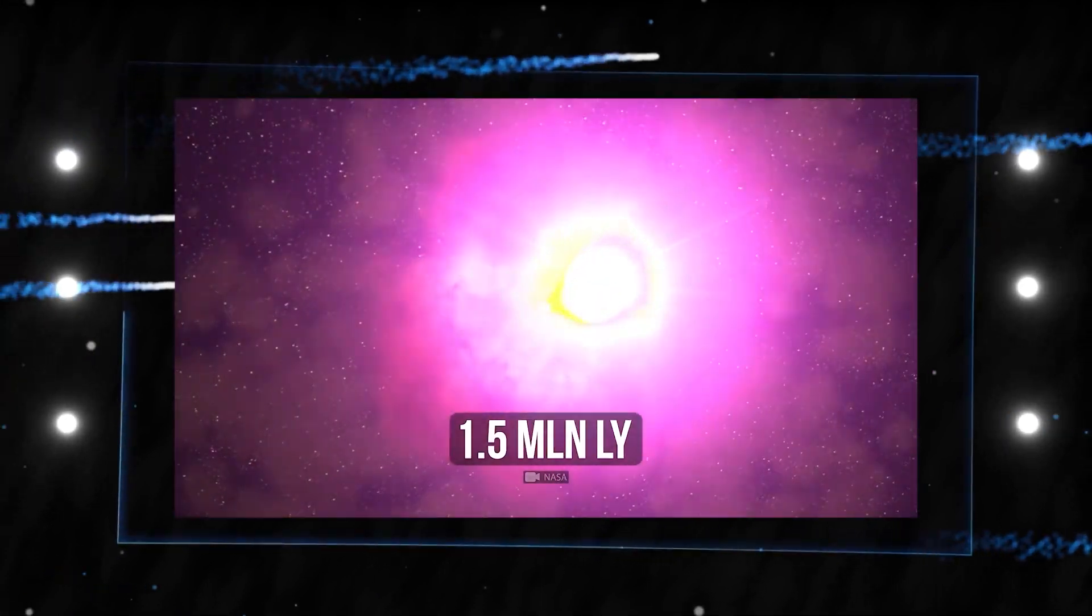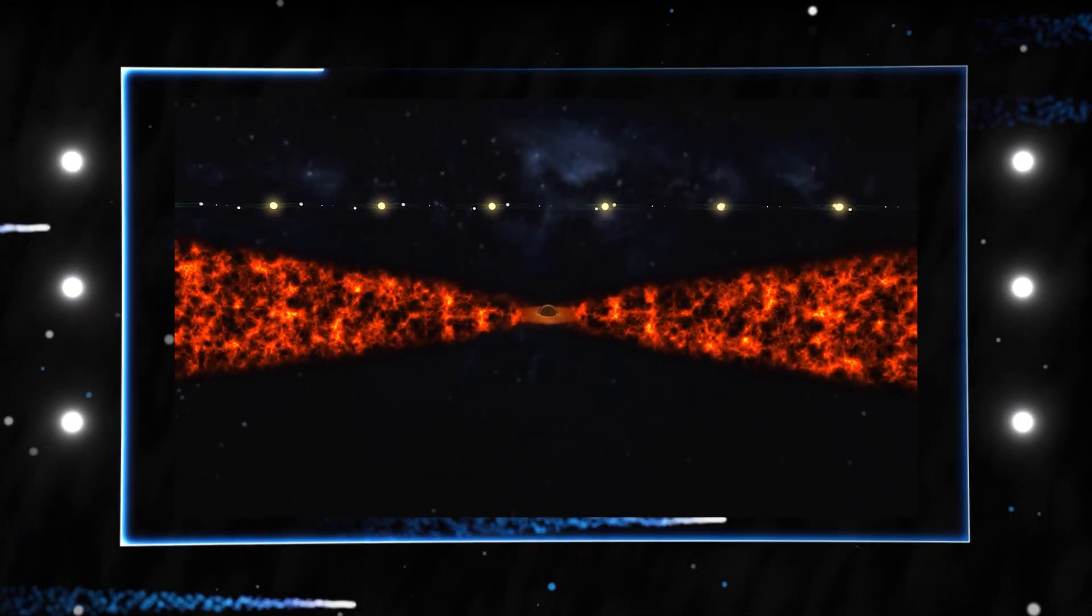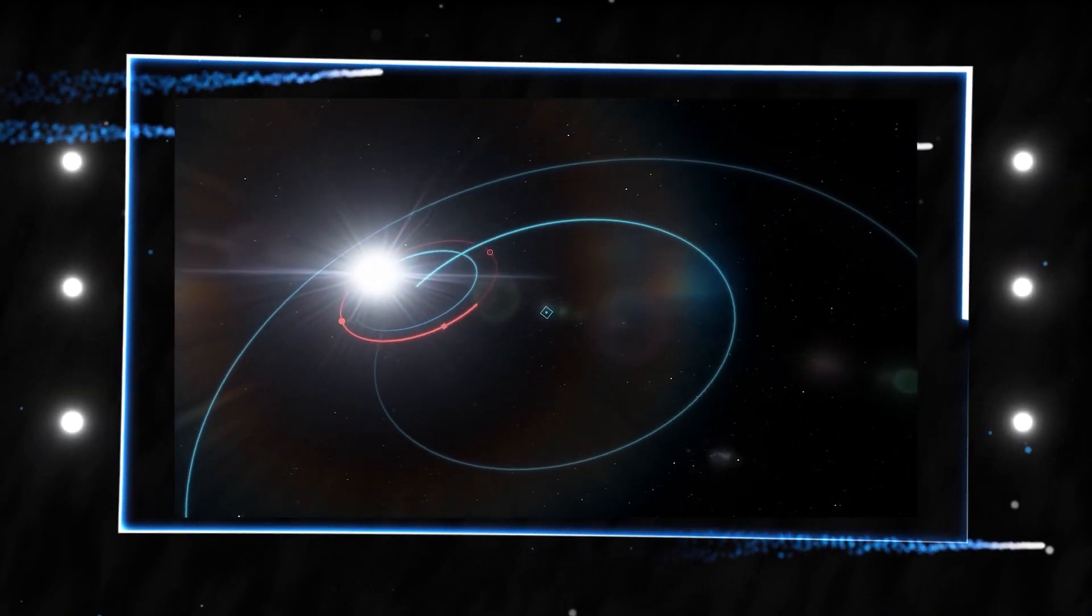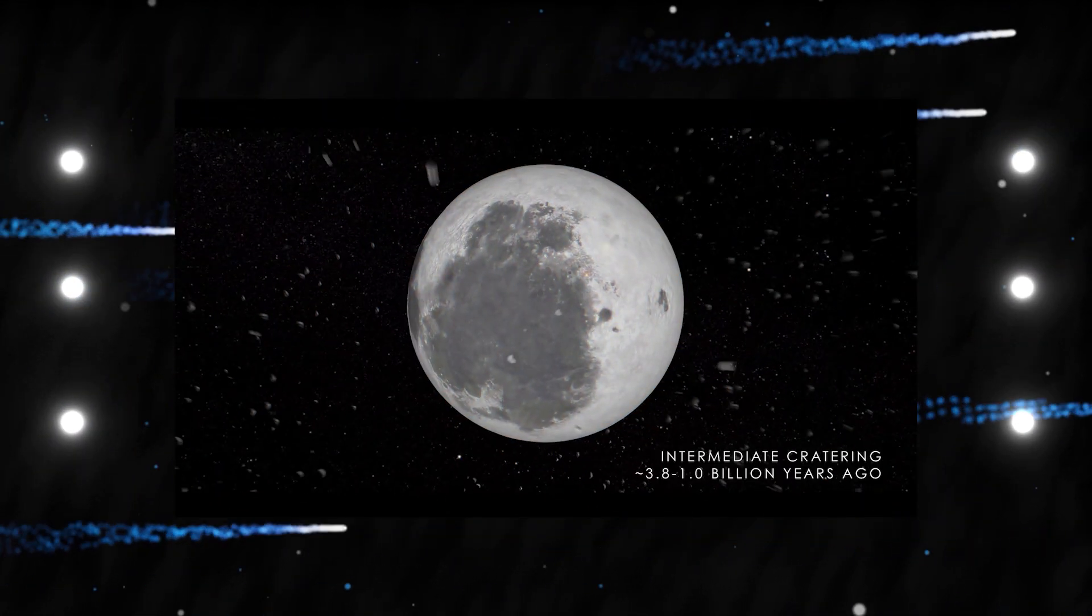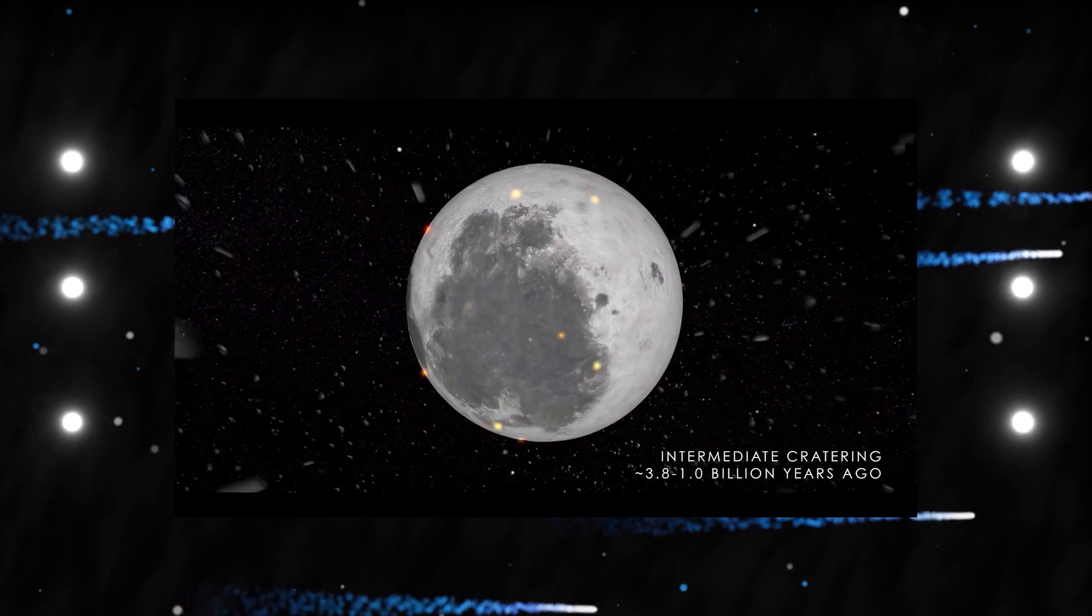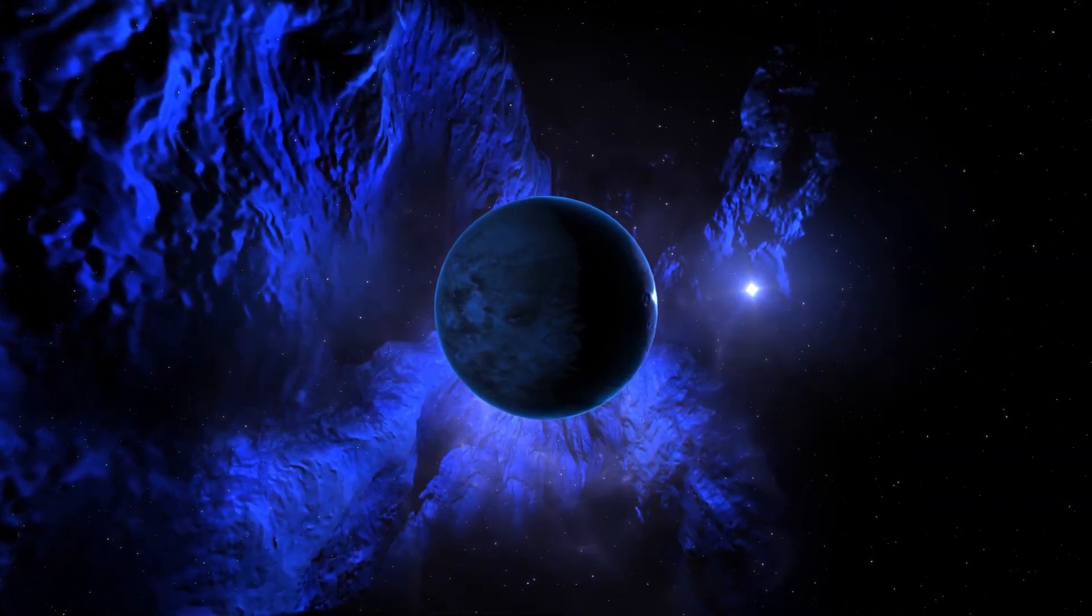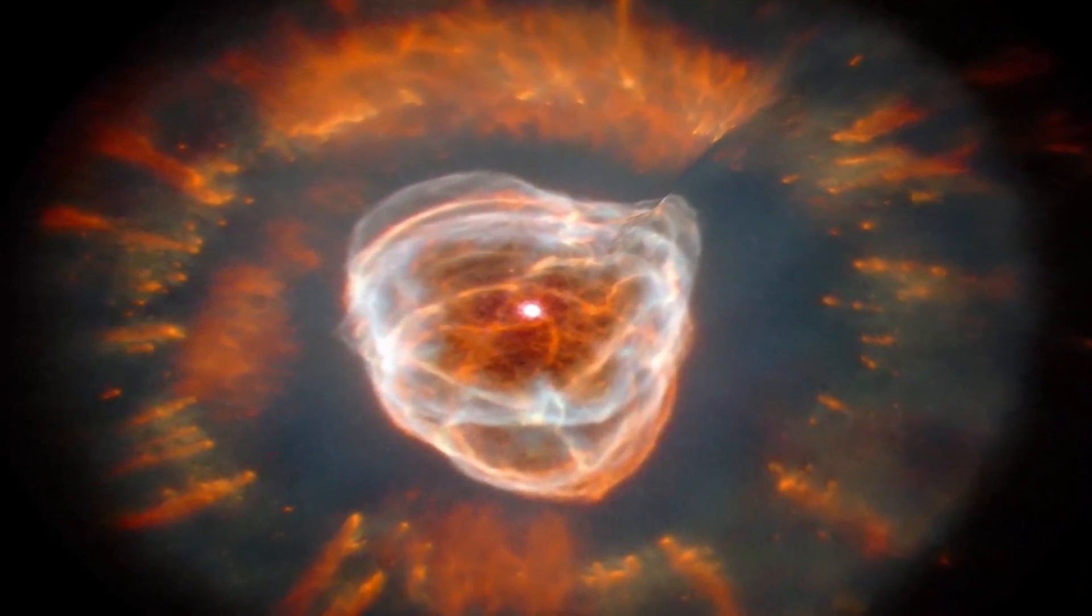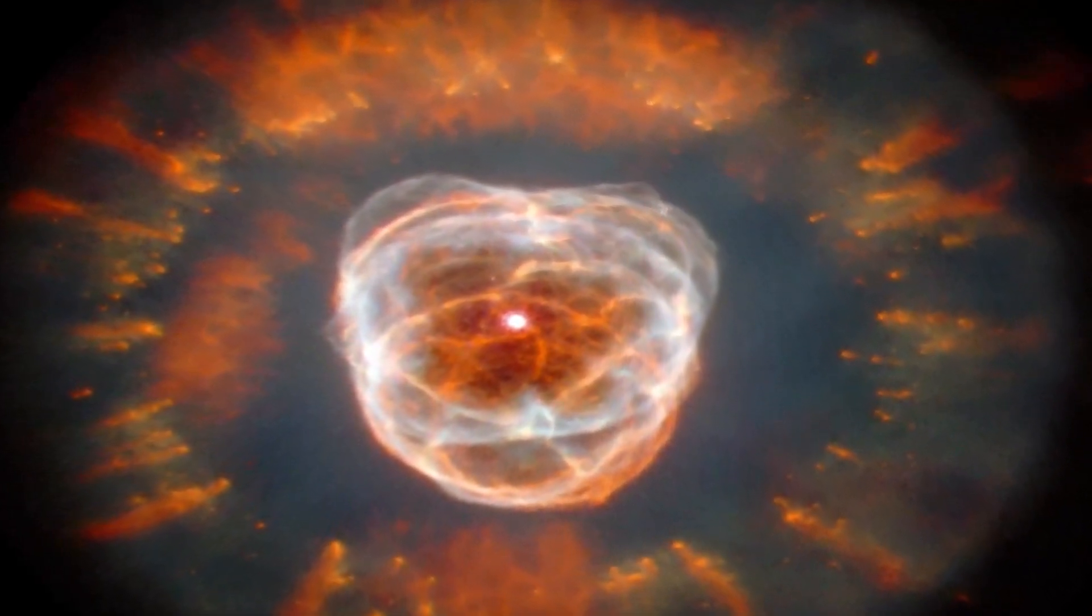China will play a leading role in the development of a portable communication and navigation system that is capable of employing the Moon as a relay. There is a remote chance that the teeny-tiny constellation won't be formally recognized until 2023 or 2024. In addition to this, it actively sought the collaboration of international partners in carrying out its objective.